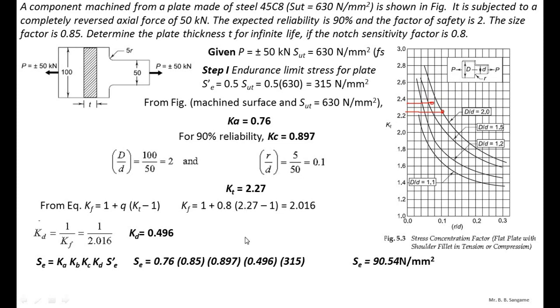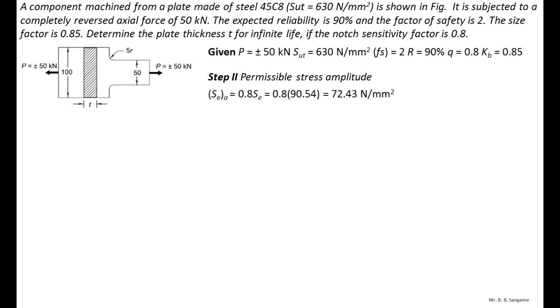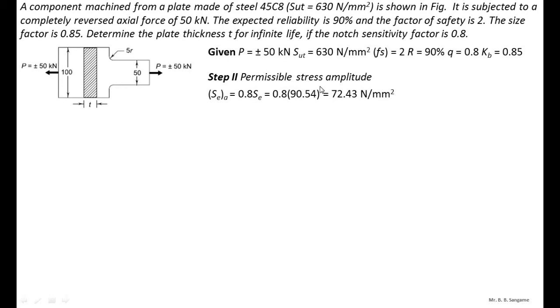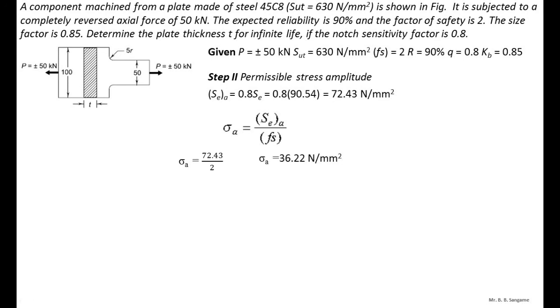Step 2: calculate the permissible stress amplitude. Sea = Se / factor of safety. With Se = 90.54 N/mm², Sea = 90.54 / 2 × 0.8 = 72.43 N/mm². Then the stress amplitude sigma_a = Sea / factor of safety = 72.43 / 2 = 36.22 N/mm². This is equation A.